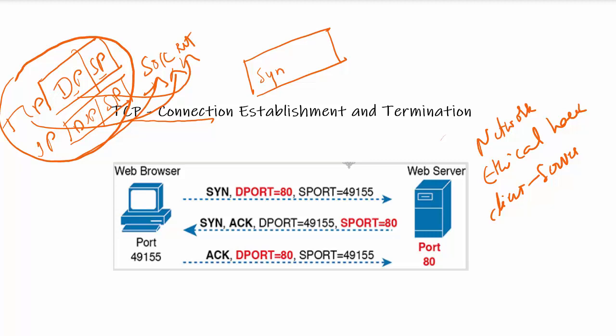To clearly understand how the SYN and ACK flags are used in communication between a client and server, the first packet is sent by the client to the server to initiate communication. This initial packet will be a SYN packet. If the SYN bit is turned on in the TCP header, that means it is a SYN packet. The destination port will be port 80 because the user is trying to communicate with the web server, which listens on port 80. The source port is 49155.